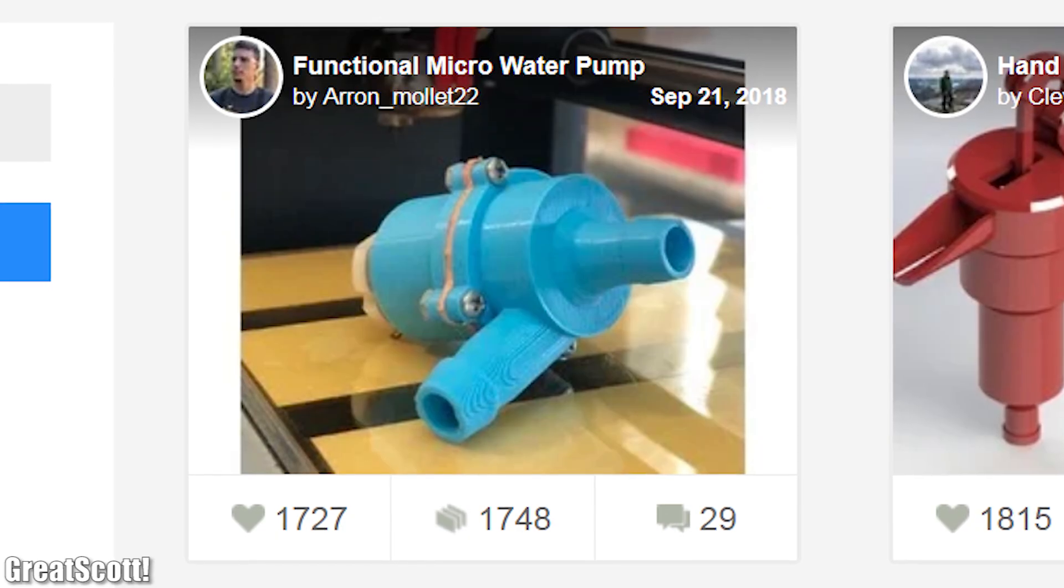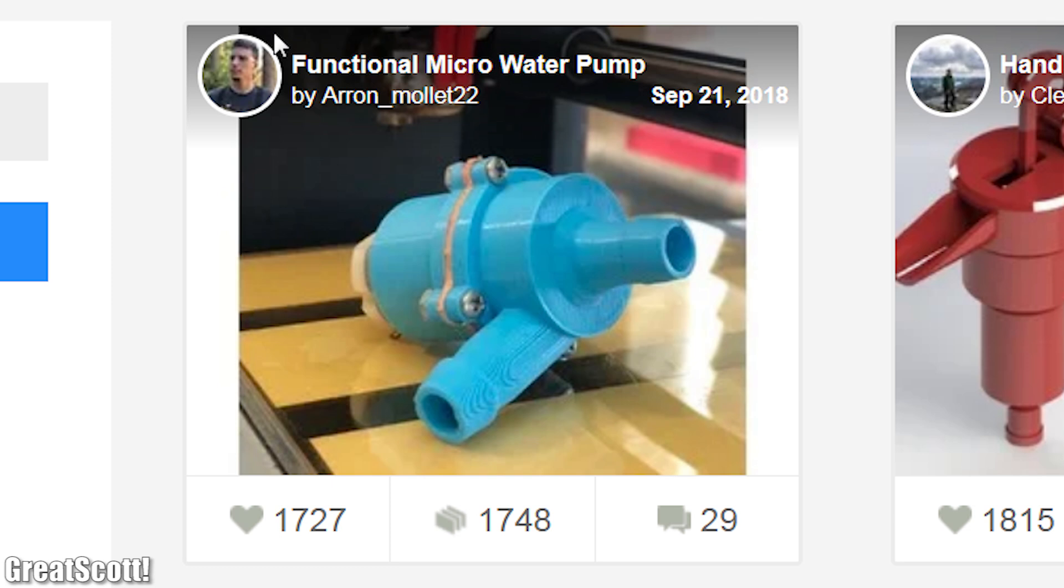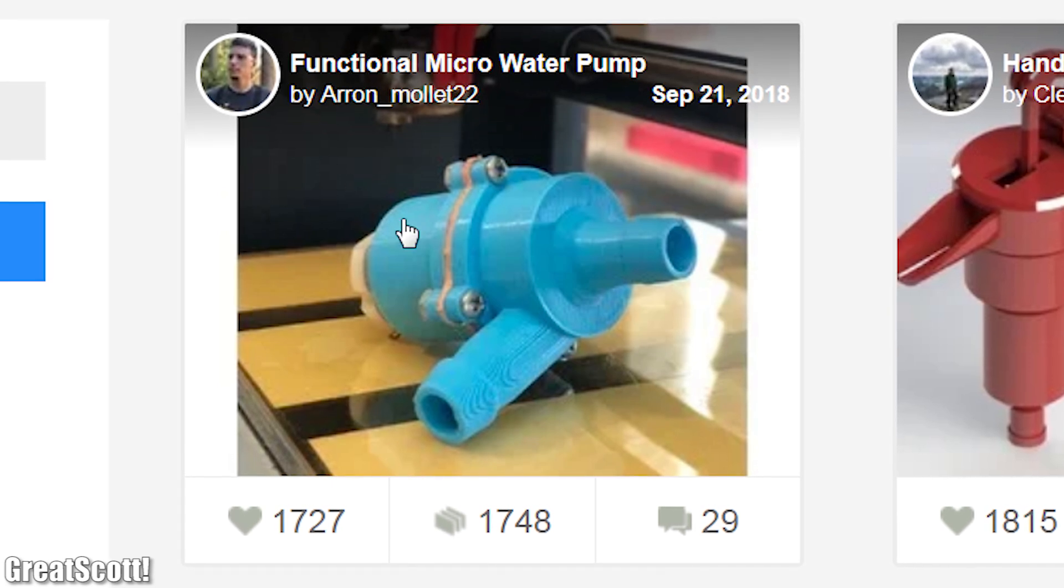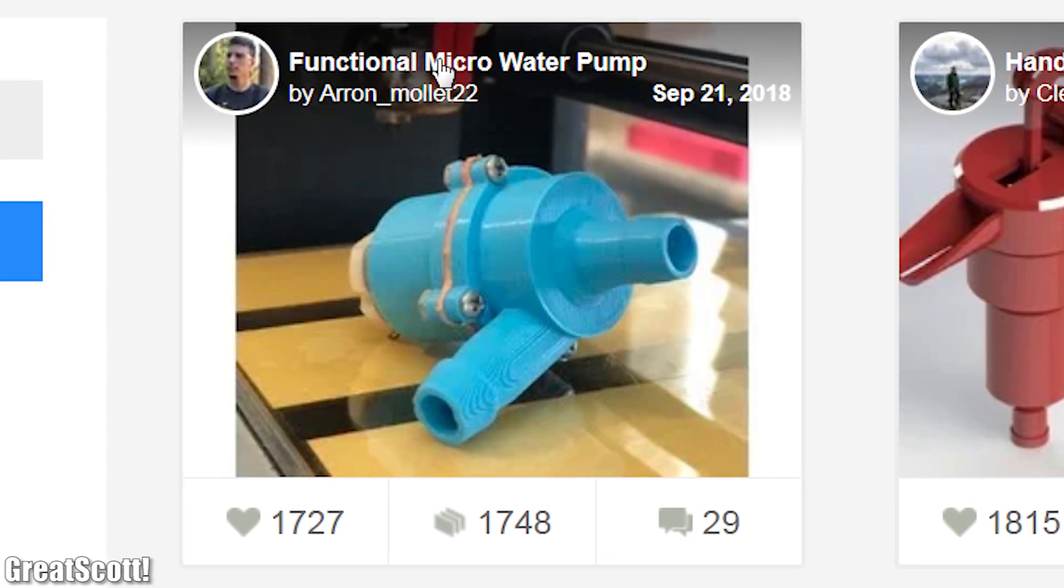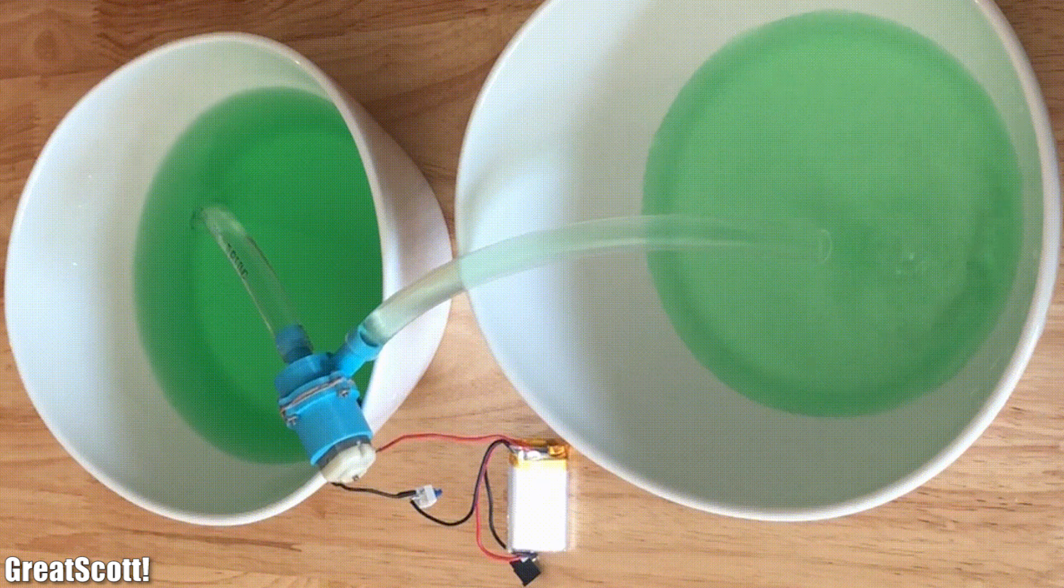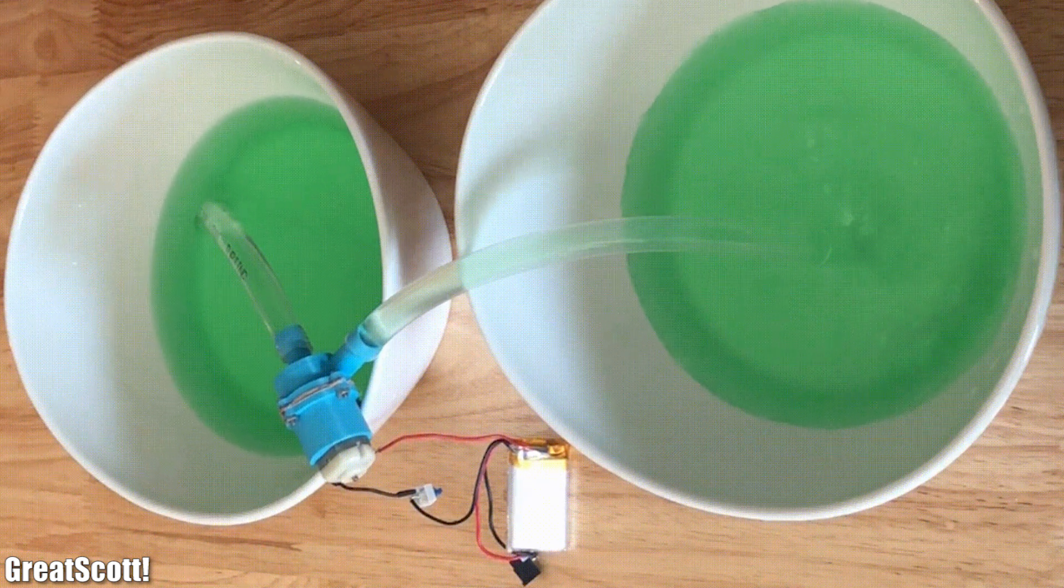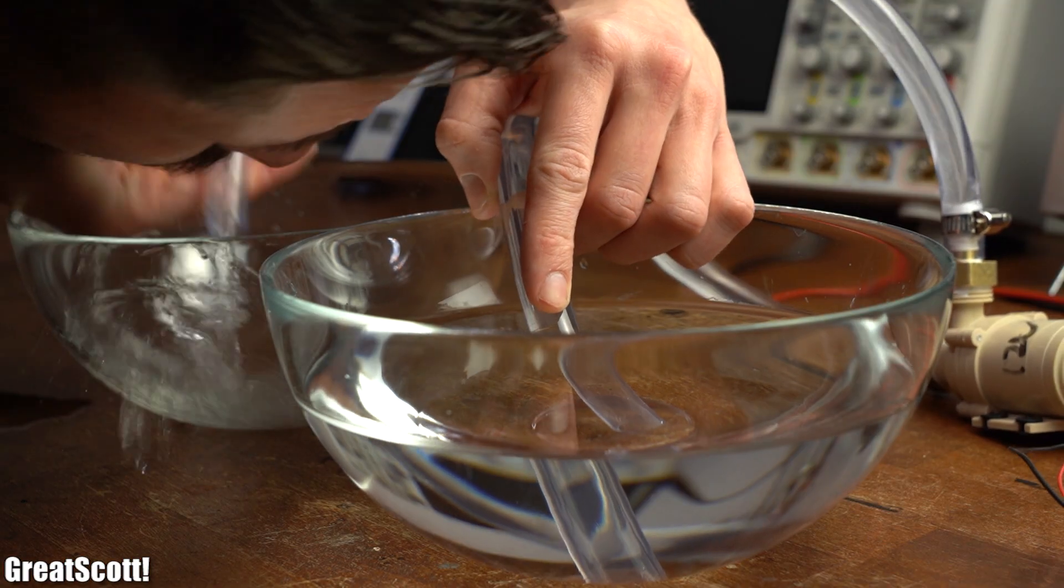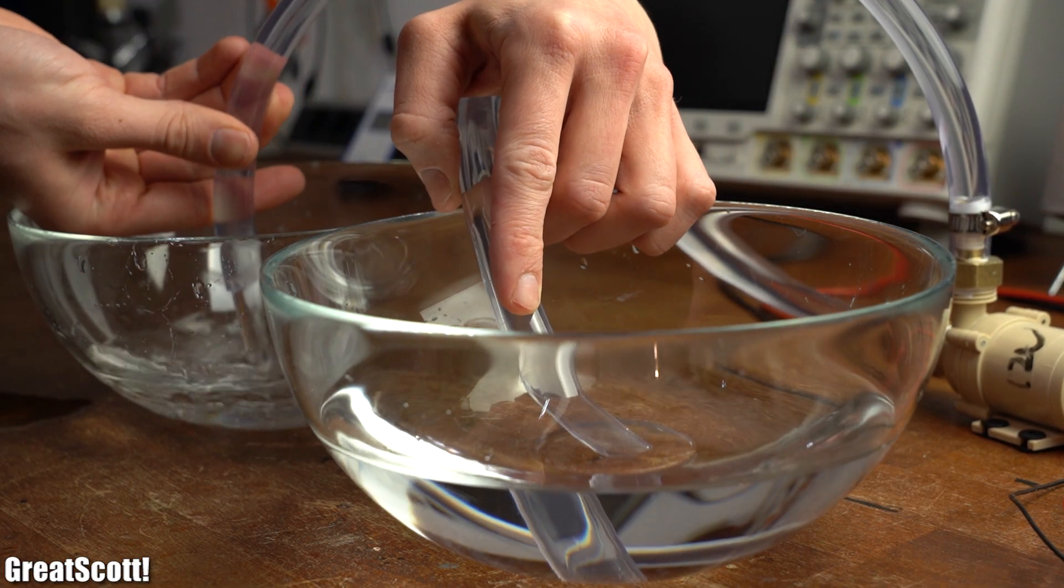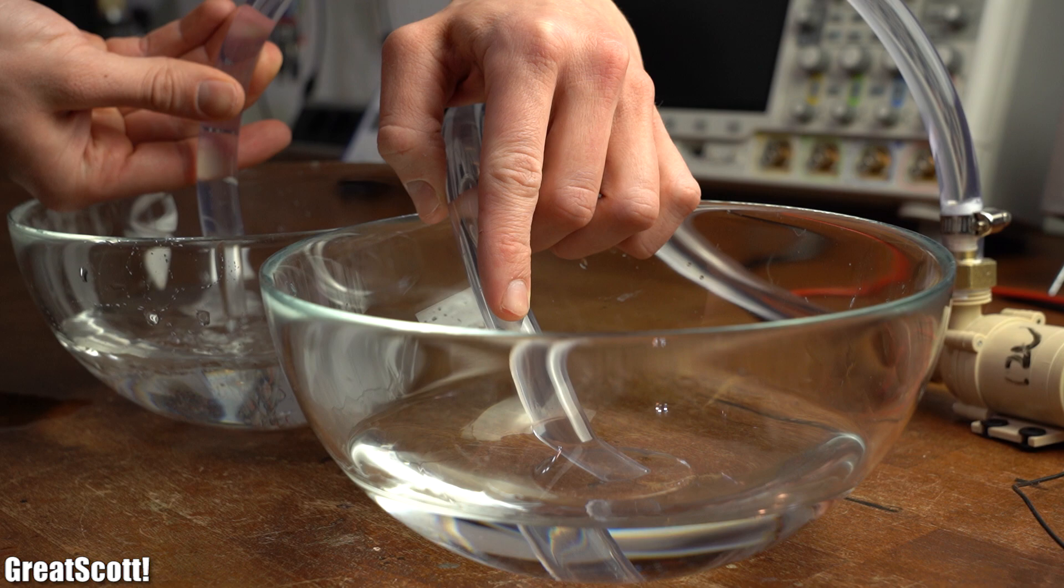Of course there also does exist a promising looking 3D printed micro water pump on Thingiverse whose material will not experience such big forces in comparison to my big 3D printed pump. But then again, if I want a small DC water pump then I would go with the commercial solution.